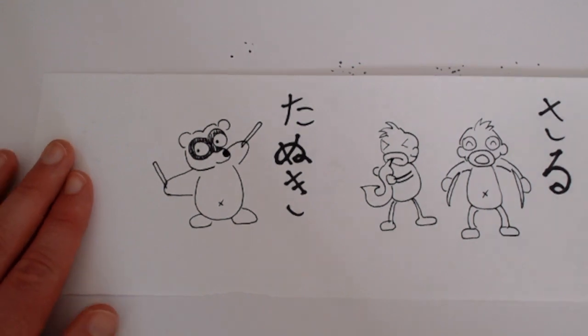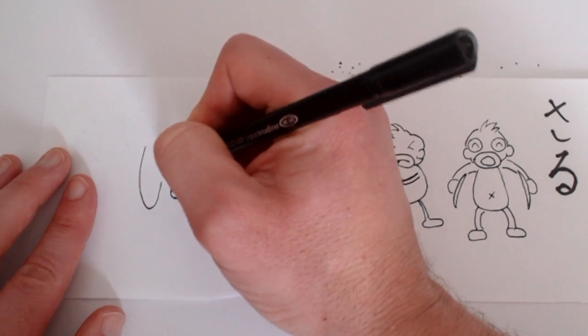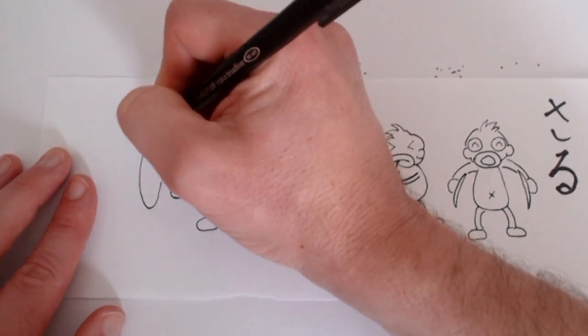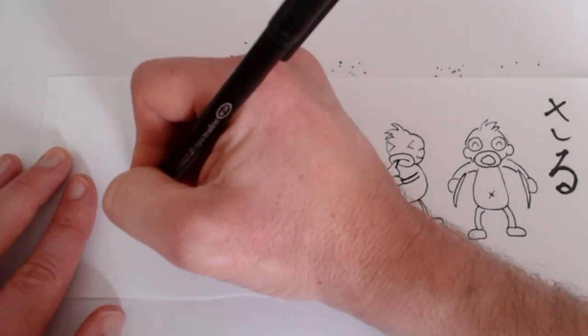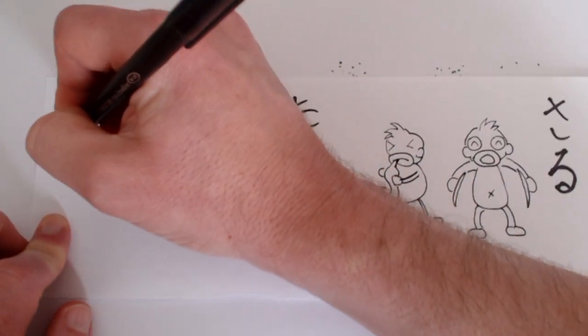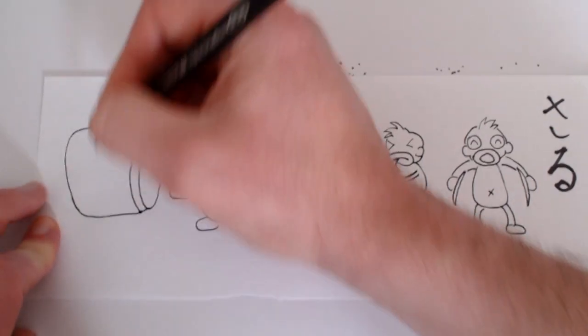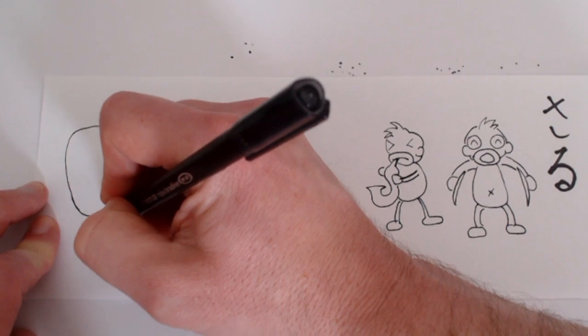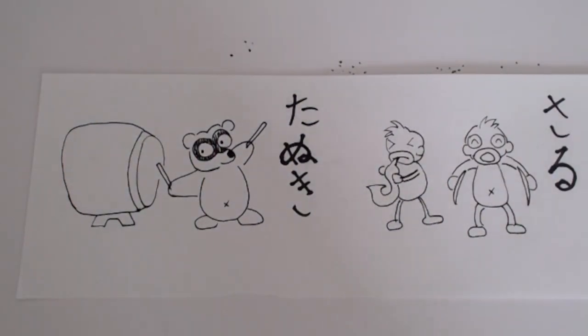And what he's playing is a taiko drum. I'll try and make it match up with where his sticks are. Or one of his sticks. There we go. I'm going to stand them. Right. That's my emaki.